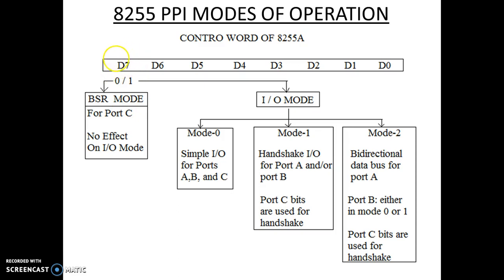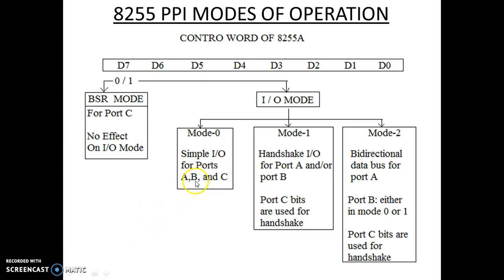If the D7 bit is 1, then IO Mode is selected. In IO Mode, we have three different categories: Mode 0, Mode 1, and Mode 2. Mode 0 represents simple input-output modes for ports A, B, and C. All these ports act as individual input and output lines. Port A has 8 lines, Port B has 8 lines, and Port C has 8 lines — altogether, 24 IO lines can be used in Mode 0.